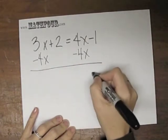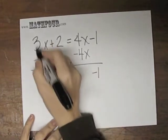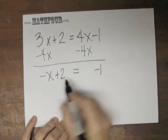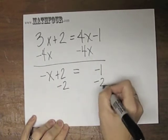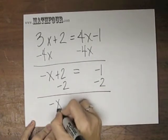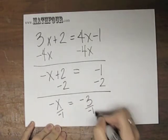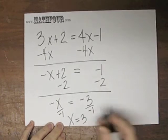So, I have negative 1 left on this side. This is negative x plus 2, and then I can subtract 2 from both sides, and I get negative x equals negative 3, divide by negative 1. Get rid of those negatives, and so I have x equals 3.